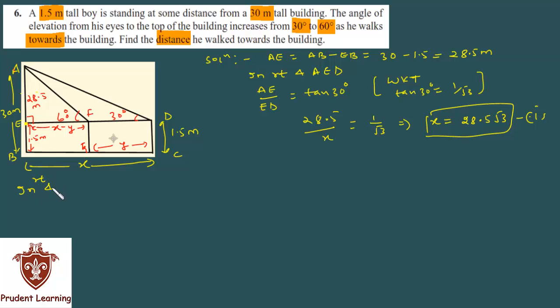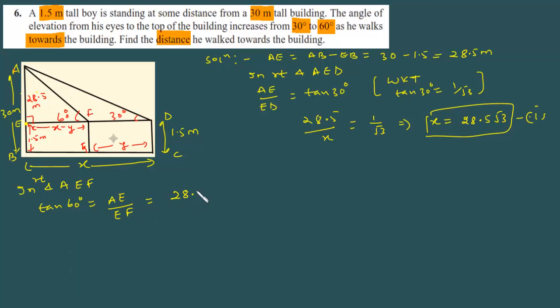In right triangle AEF, you will write tan 60 degrees is equal to perpendicular AE. We use tan because we have to work with perpendicular and base. AE upon EF. Now AE is again 28.5 upon EF, which is x minus y. And we know that tan 60 degrees is root 3. On substituting tan 60 degrees as root 3, we get root 3 is equal to 28.5 upon x minus y, which gives x minus y as 28.5 upon root 3.